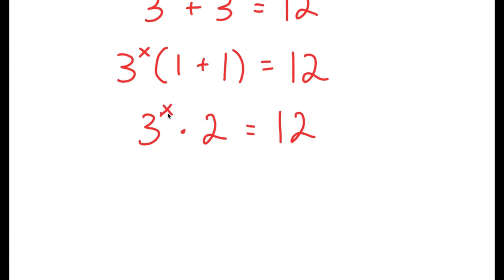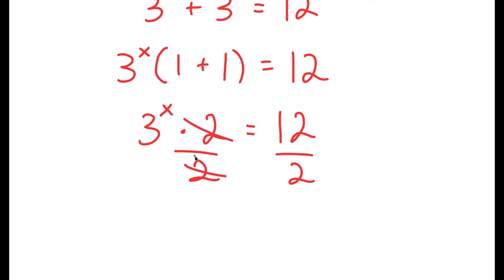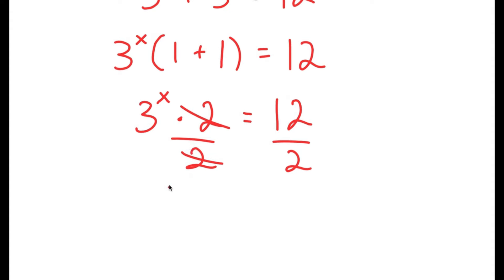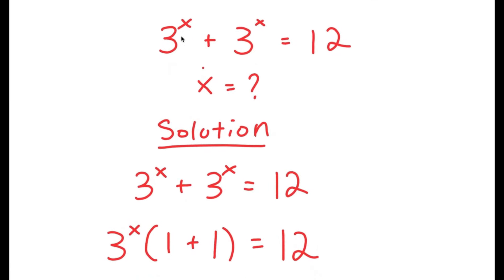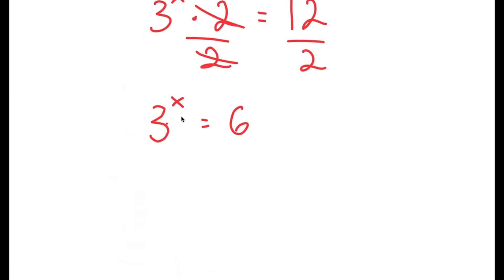From here, we want to isolate x. To do that, we have to get rid of this times 2 by dividing both sides by 2, so these two cancel out. I'm left with 3 to the power of x is equal to 12 divided by 2, which is 6. So now I have the simplified equation 3 to the power of x is equal to 6.